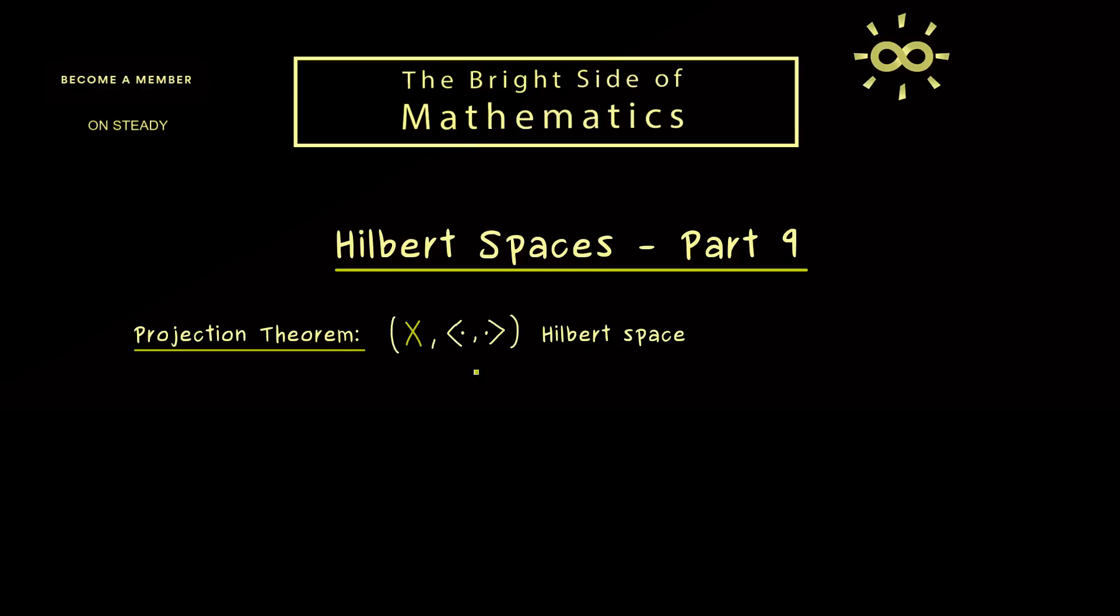So you see, as stated in the last two videos, we need the two things. On the one hand we need the inner product, and on the other hand we need the completeness of the space. And moreover, we will also consider a closed subspace U inside our Hilbert space X.